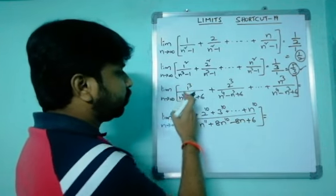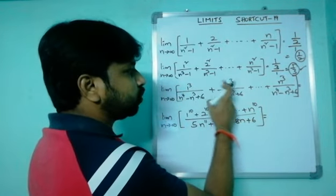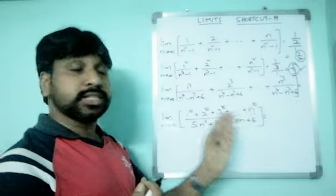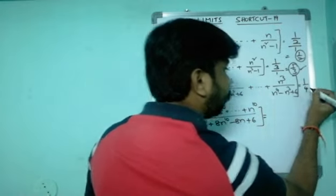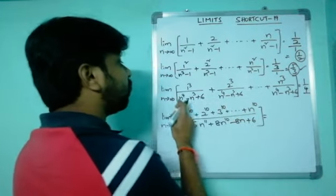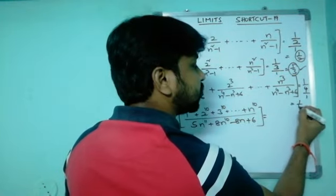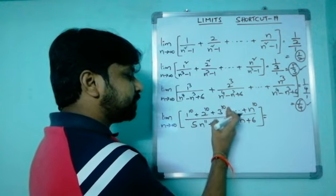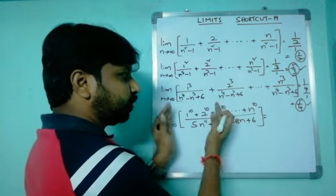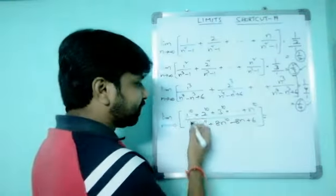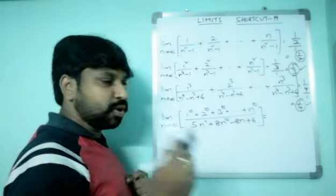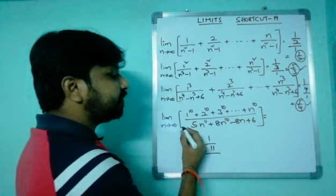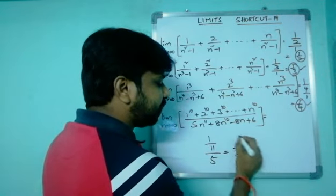For the next example: 1³ + 2³ + ... + n³ over (n⁴ − n³ + 6): the difference between numerator power 3 and denominator power 4 is 1, and all denominators are the same. The shortcut gives 1/4 divided by the coefficient of n⁴, which is 1, so the answer is 1/4. For the last example: limit n tends to infinity of (1¹⁰ + 2¹⁰ + ... + n¹⁰) over 5n¹¹: numerator power is 10, denominator power is 11, difference is 1. The answer is 1/11 divided by coefficient 5, which gives 1/55.